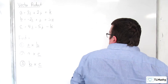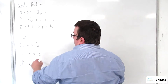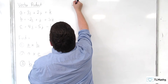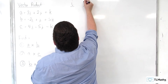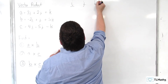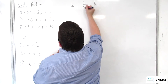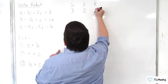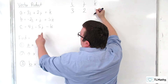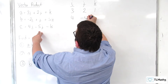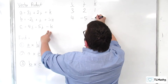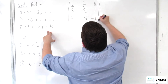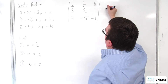So let's look at number 2, A cross C. So we have I, J, K — then 3, 2, 1 for A — then 4, minus 5, minus 1 for C. And we want the determinant of that.